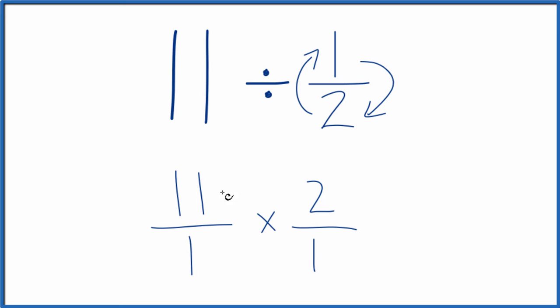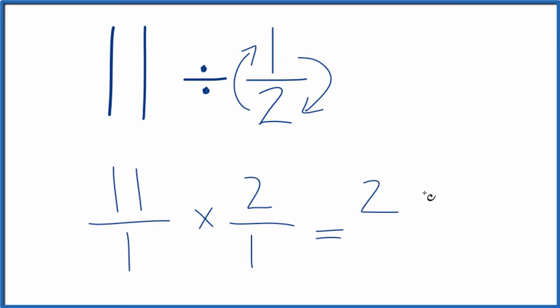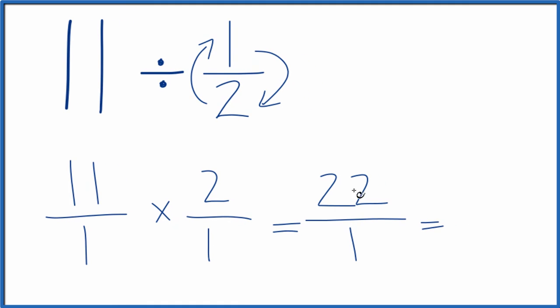Now with fractions like this, we just multiply the numerators and then multiply the denominators. So 11 times 2 is 22. 1 times 1 is 1, and 22 over 1, we're just dividing by 1, so it's 22.